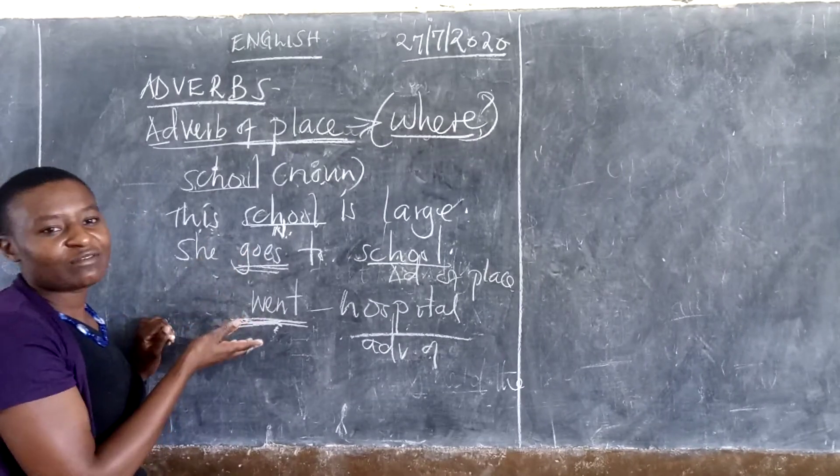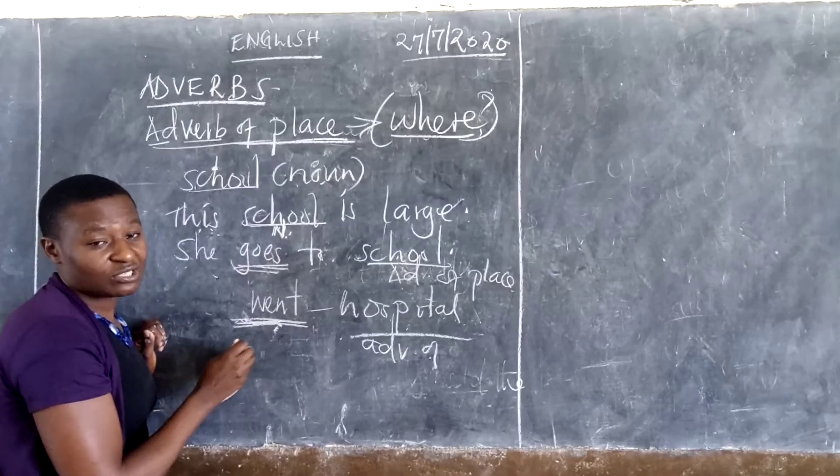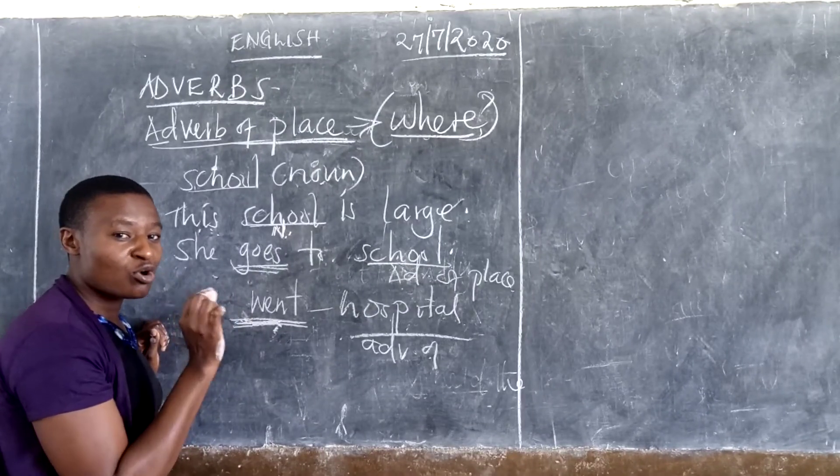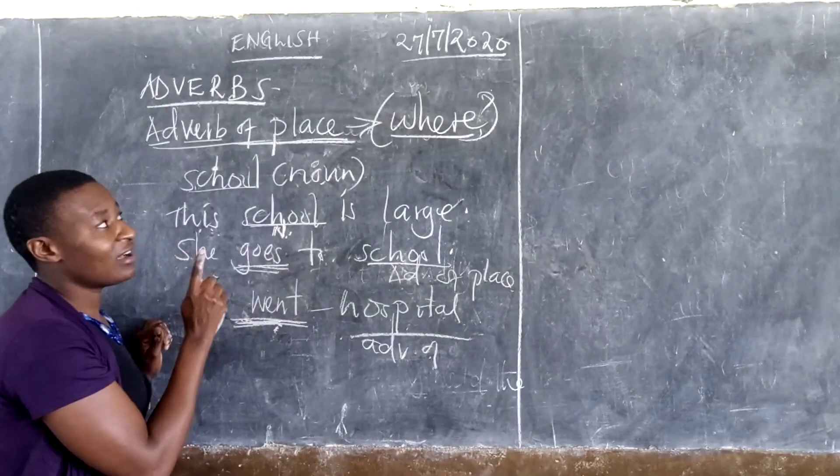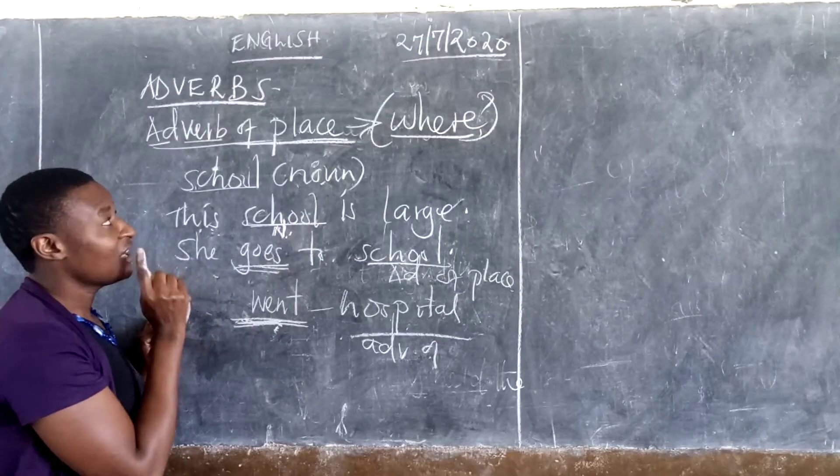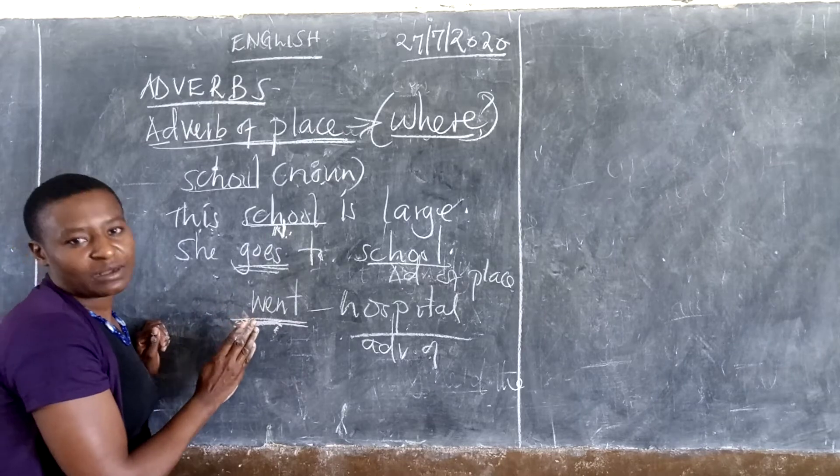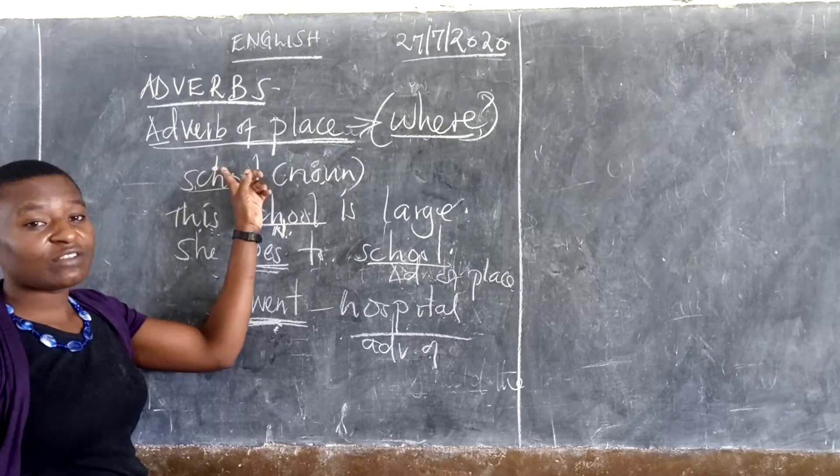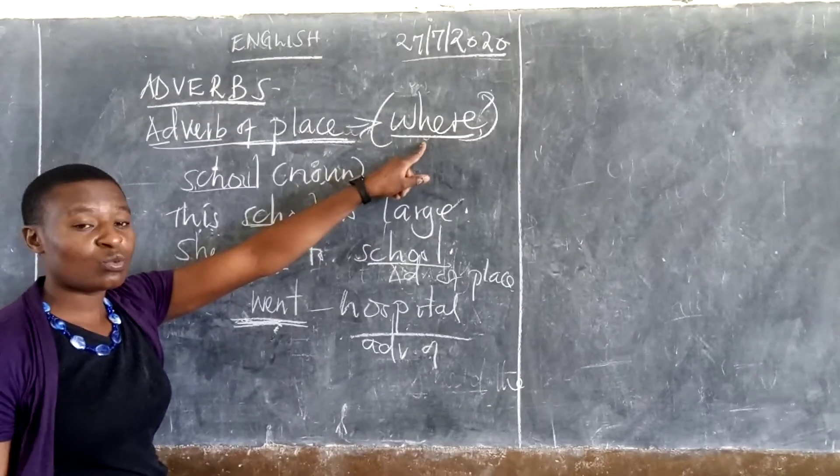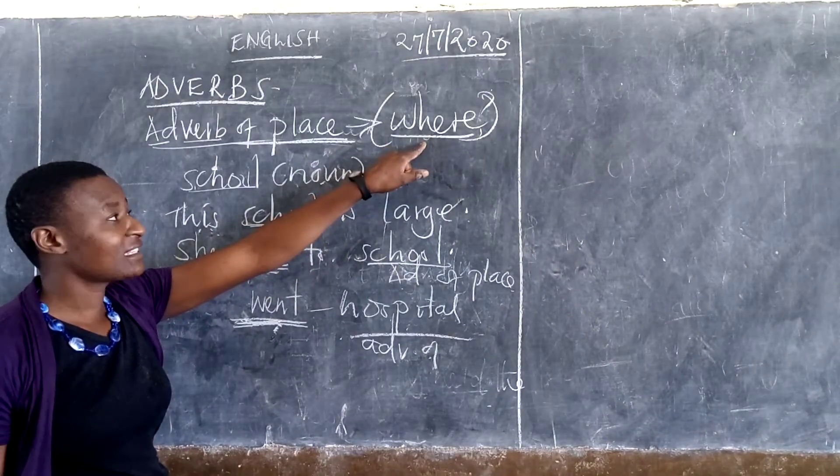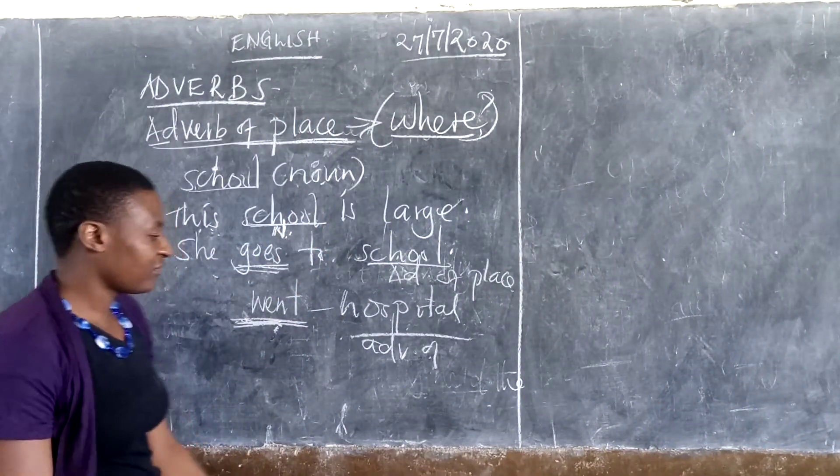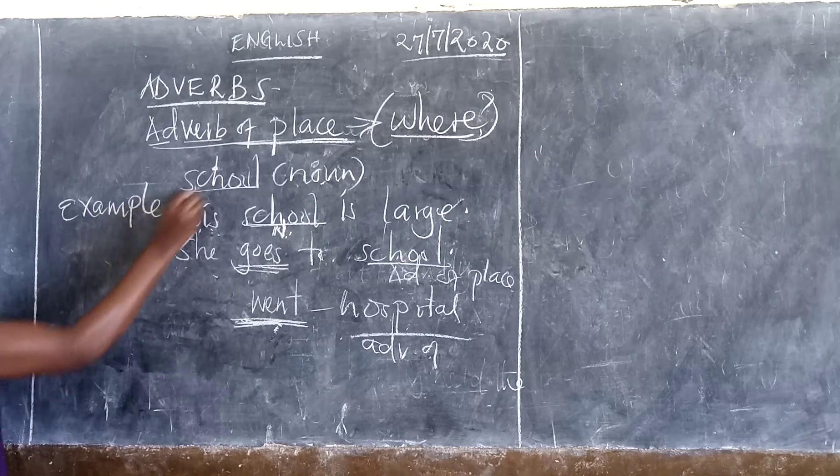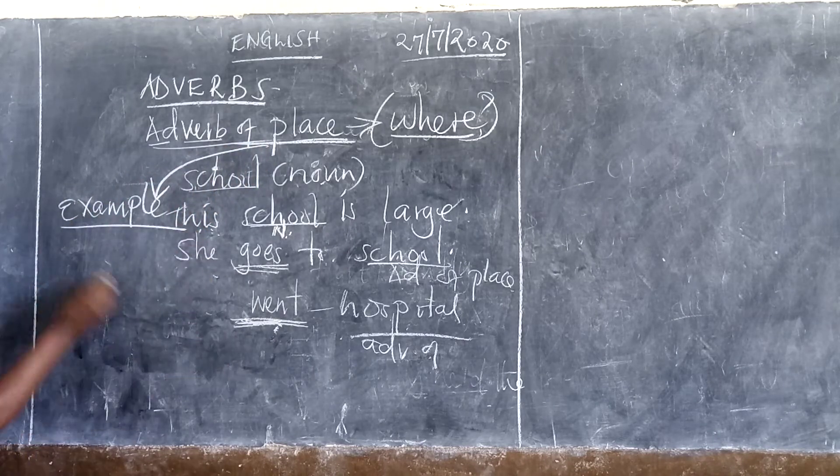I'm not going to mix adverb of place today and adverb of time because you'll get confused. I'm going to take it. I'm going to give you small dose by dose. So, today I wanted us to look at adverb of place. Let me hope I'm clear on this. Just to emphasize, an adverb of place answers the question, where? Examples of adverb of place.